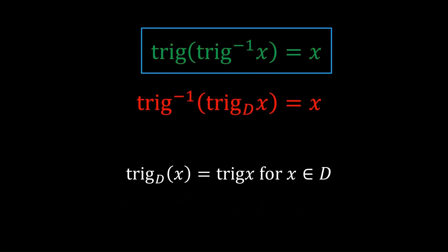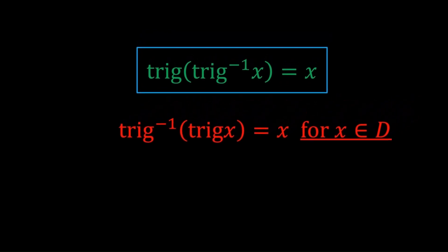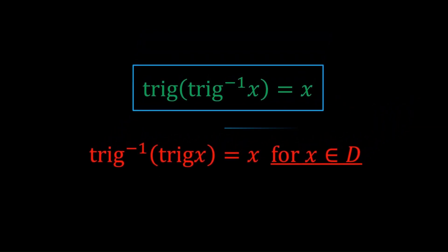Okay, now how about the second one? We use the exact same idea for the second one. But the thing is, we don't know whether x is in d. So all we do is we just add this condition, and that means we have trig inverse trig x is equal to x for x in d. Basically, trig inverse acts as the inverse of trig, but only for the domain d, which is why in that domain, you can compose them in this way and just get back x. If you understand these two formulas, you definitely understand inverse trigonometry.